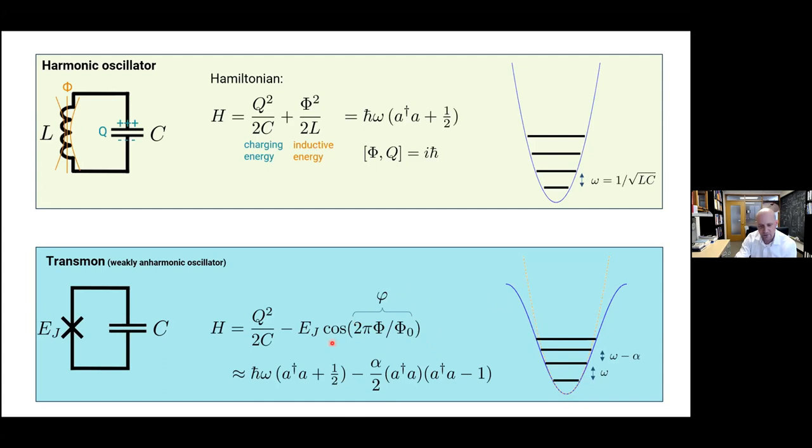So we might just attempt to expand the cosine to leading order. We recover our harmonic oscillator. And then if we go to next higher order, then we will discover that there are corrections to the parabolic shape of this potential, of course. And so there's another term that can be written in this form. And it just says that, hey, there's anharmonicity. So these energy levels are not quite equidistant. And that turns out is enough to operate the circuit as a pretty good qubit.